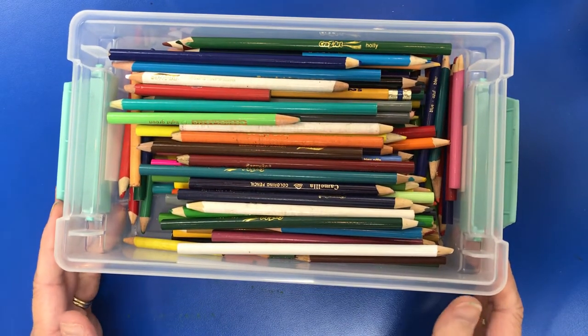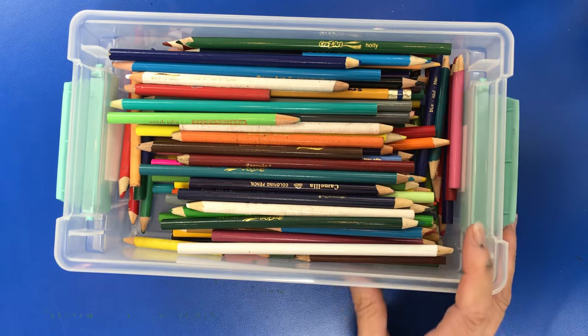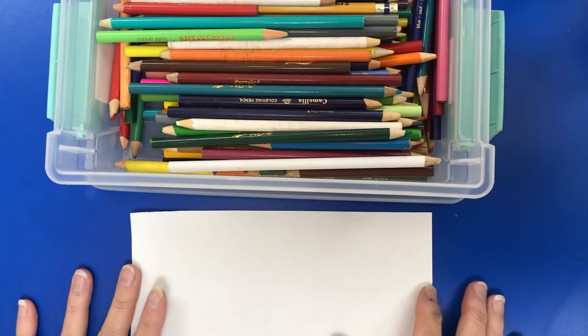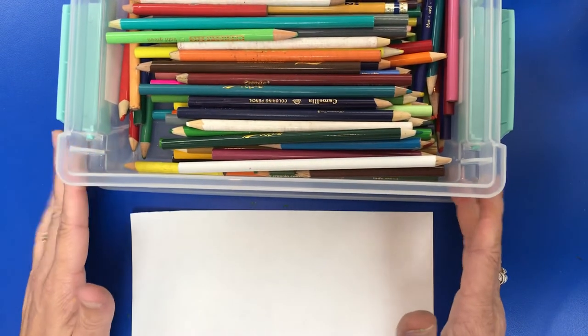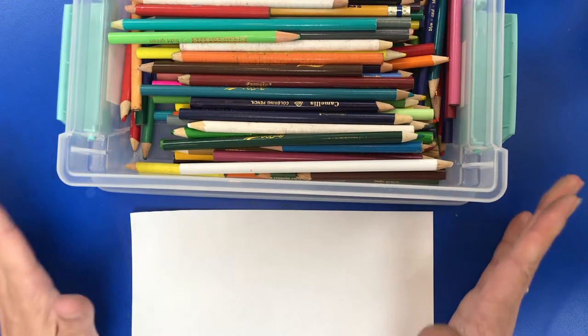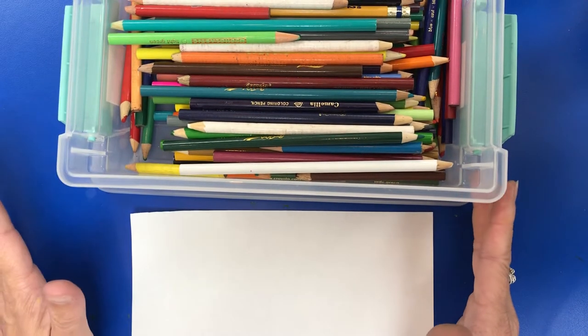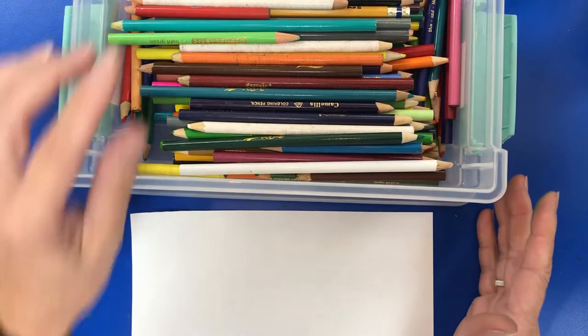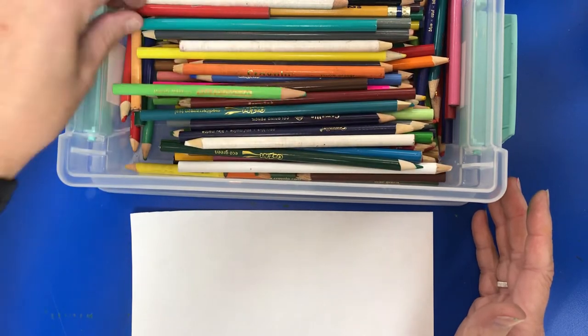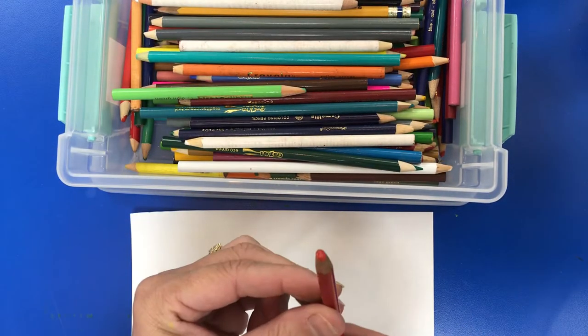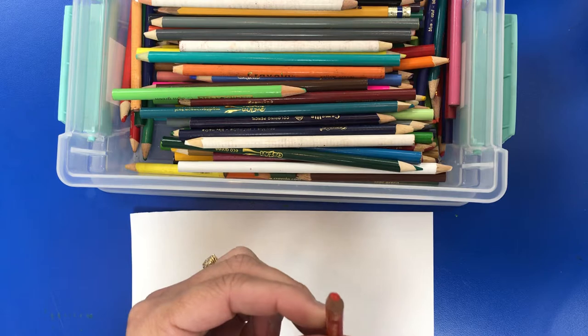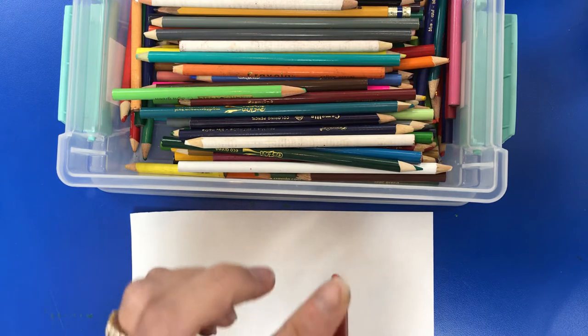For colored pencils, these particular colored pencils cannot be sharpened in the electric sharpener because they jam the electric sharpener. So if you need to sharpen, this one tells me I need to sharpen it. Do you see how there's really no color that I can use because of the wood showing on there?